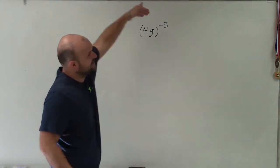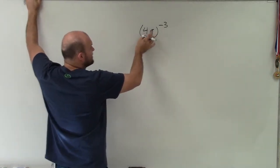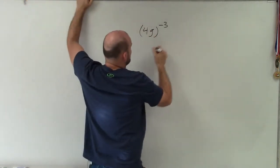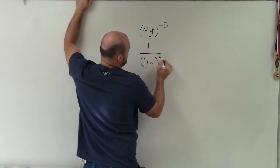One, I can say, to get this to a negative exponent, it doesn't matter how many terms I have inside this parenthesis. If I want to make this a positive exponent, I can rewrite this as 1 over 4g to the positive third.